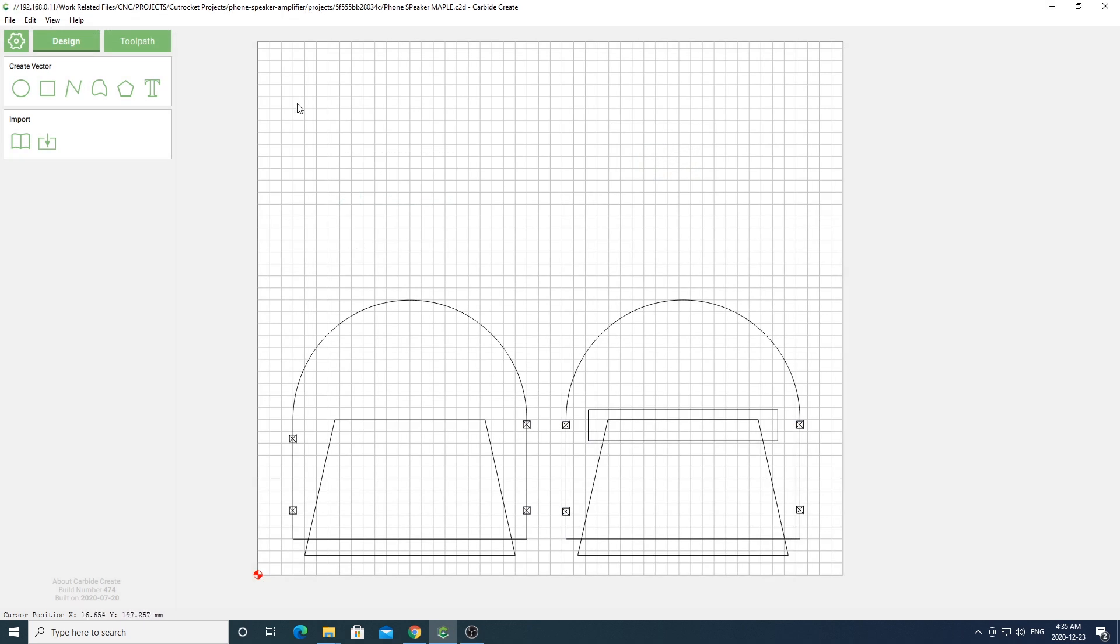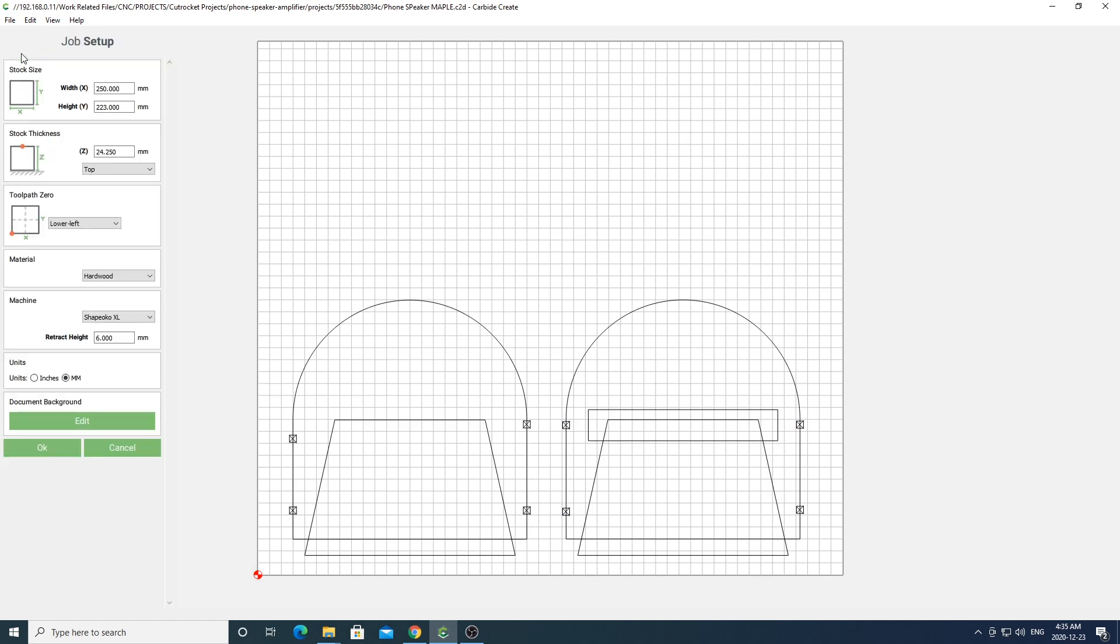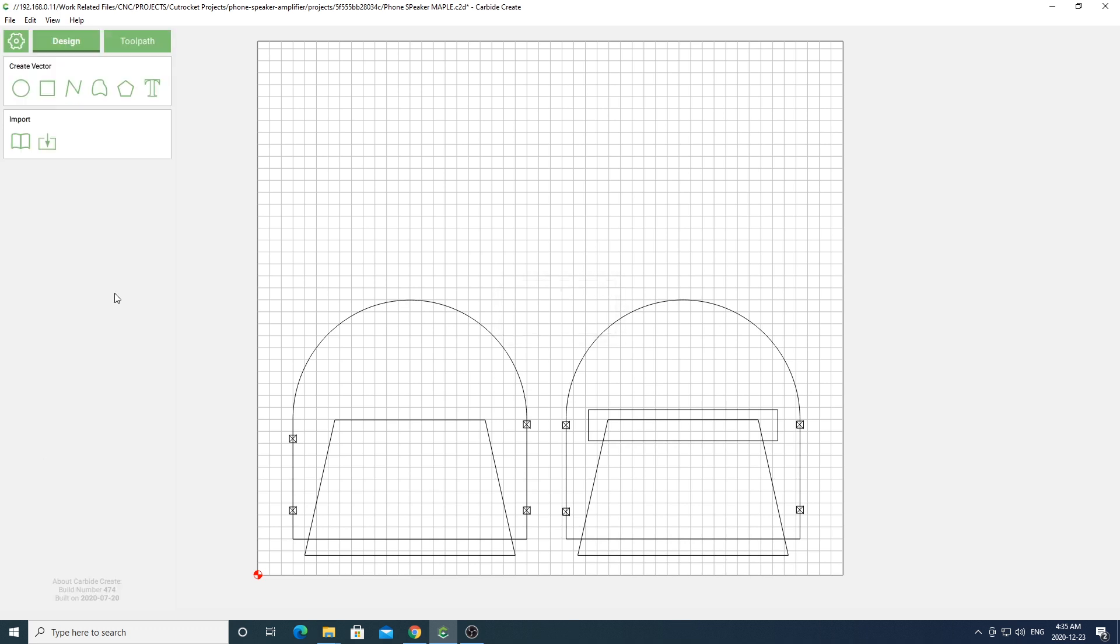Once you've downloaded the project go ahead and open it up in Carbide 3D. It should look something similar to this. You'll then want to go over to your settings window and change your width and height and also your stock thickness to whatever wood you're using. Also make sure to go ahead and change any other settings that need to be changed for your machine like your tool path zero, material type, or machine model.